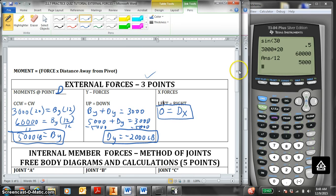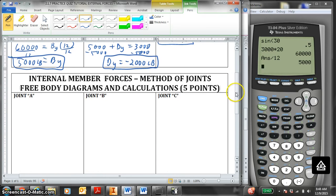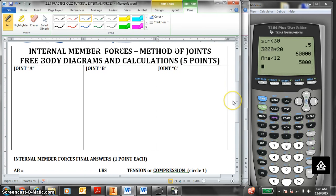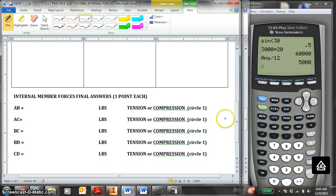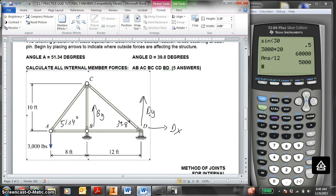The next thing you have to do is solve for the internal member forces. Remember, for this truss, there are five answers. A-B, A-C, B-C, B-D, and C-D. There are five segments in this single truss. So there are five internal forces.